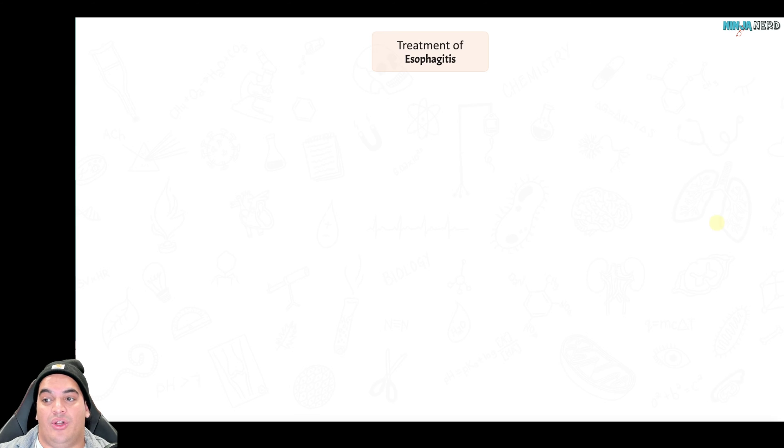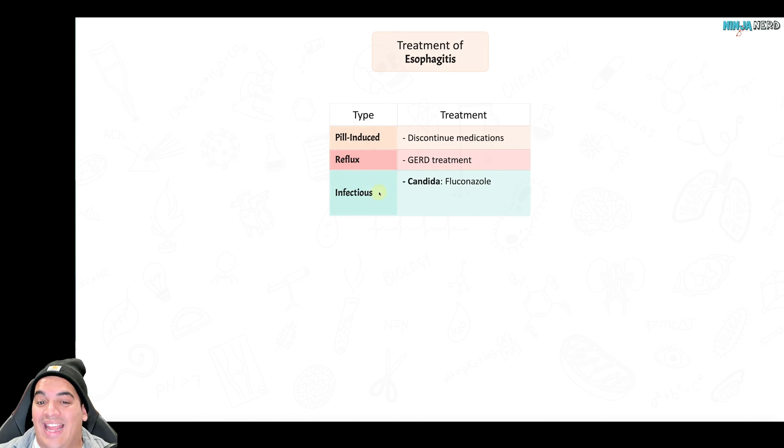If it's pill-induced, just discontinue the medication if possible, or ensure that when you take the medication, you take it with a full glass of water and stay upright for at least 30 minutes after taking that pill. With reflux, it's treating the GERD, so it's about putting them on a proton pump inhibitor, an H2RA of some sort, but also treat their underlying trigger - maybe it's weight loss, maybe it's avoiding particular foods.